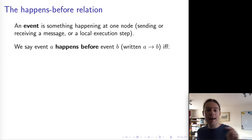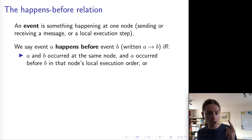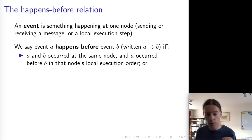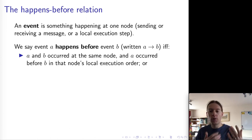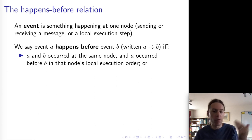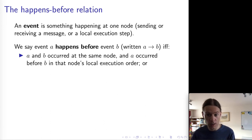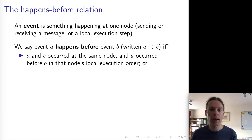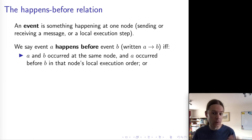We can now define a relation — a set of pairs of events that describes how those events relate to each other. The happens-before relation is written as A → B if A happened before B. We say A happened before B if at least one of three things is true. First, the two events A and B happened in the same node and A occurred before B in that node's local execution order. We assume each node is a single-threaded process, so there's no ambiguity about ordering on a single node — things happen one after another in a strict total order.